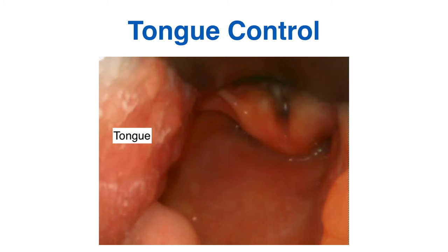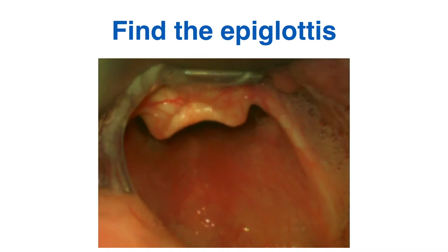The next thing to do is to locate the epiglottis. Advance the laryngoscope down the pharynx searching for the epiglottis - it's one of the key landmarks that will help you identify where you are in the airway. We've covered airway anatomy in a previous lecture, so if you know your airway anatomy you know where the epiglottis is and where the laryngeal opening is going to be. You can then focus your attention on where you expect the laryngeal opening to be while you do further manoeuvres to expose it.